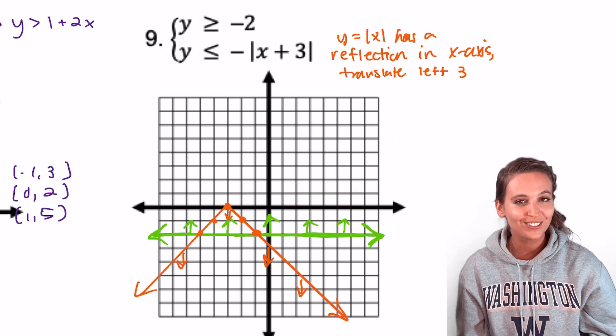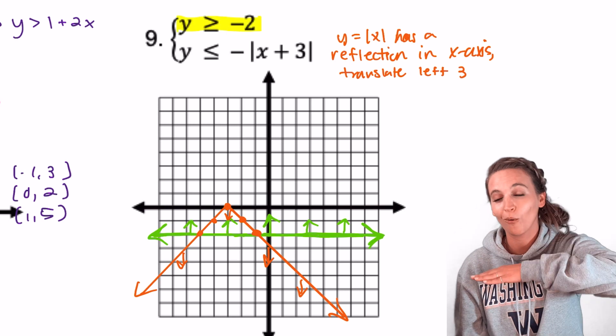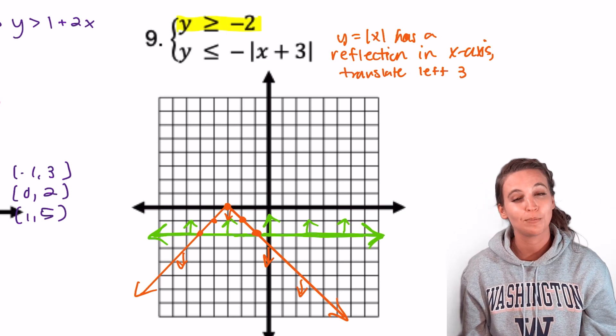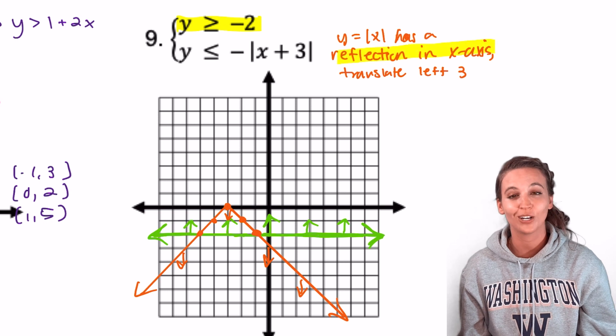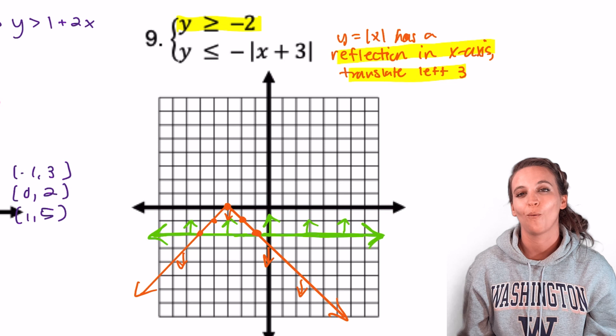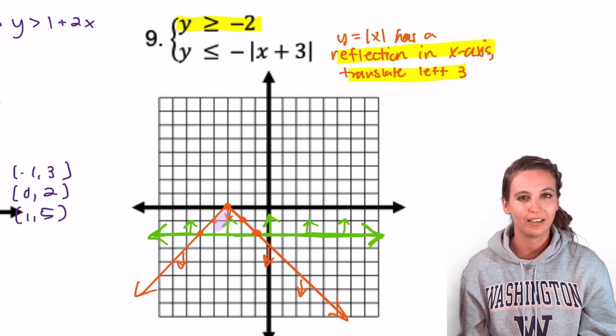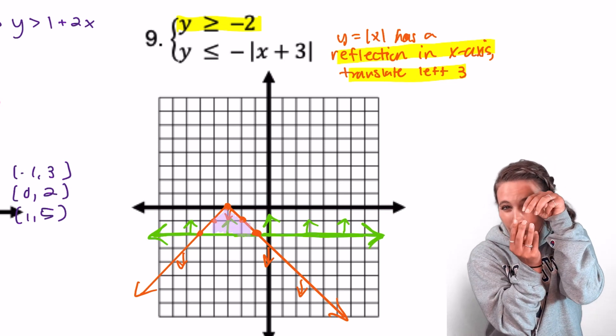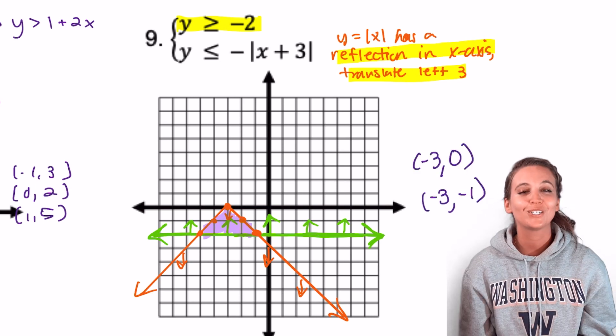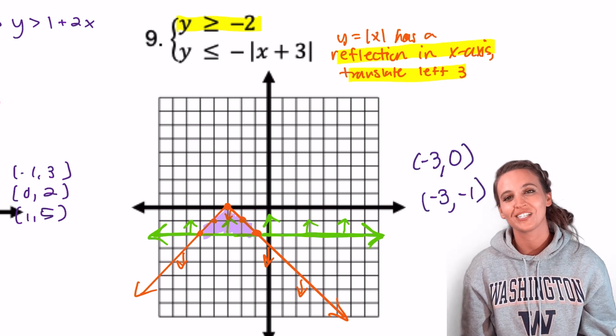Check your work. Y is greater than or equal to negative 2 is that horizontal line with everything shaded above. Our absolute value graph has been reflected in the x-axis and translated to the left 3. So where is the solution set? Where are the shaded regions overlapping? Notice my arrows are pointing at each other in that tiny triangle, so that's my solution set. Be sure to state three points in your solution set.